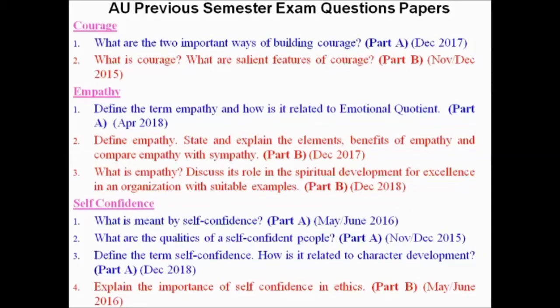The next topic is Empathy. Under this topic, Part A as well as Part B questions are asked. The Part A question is: define the term empathy and how is it related to emotional quotient? Another Part B question is: what is empathy — discuss its role in the spiritual development for excellence in an organization with suitable examples. Please take note: in professional ethics in engineering, wherever possible you should provide relevant and suitable examples. Please refer to a standard book or my slides.